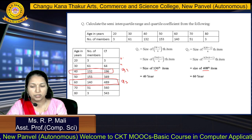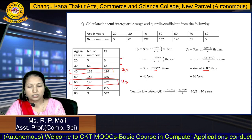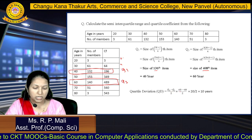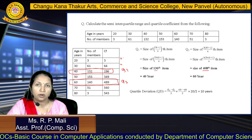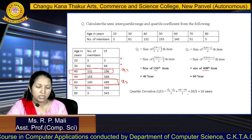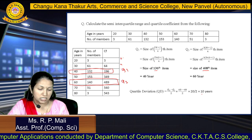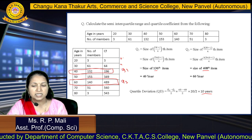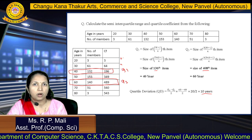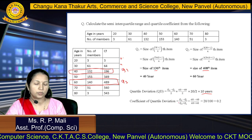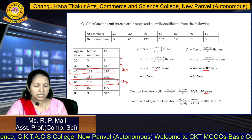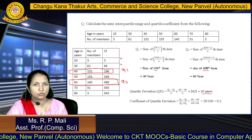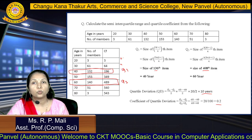Now we have Q1 equals 40 and Q3 equals 60. The semi-interquartile range equals Q3 minus Q1 divided by 2, which is 60 minus 40 divided by 2, equals 20 by 2, equals 10 years. This is your quartile deviation or semi-interquartile range. The quartile coefficient equals Q3 minus Q1 divided by Q3 plus Q1, which is 60 minus 40 divided by 60 plus 40, equals 0.2. This is your coefficient of quartile deviation. Thank you.